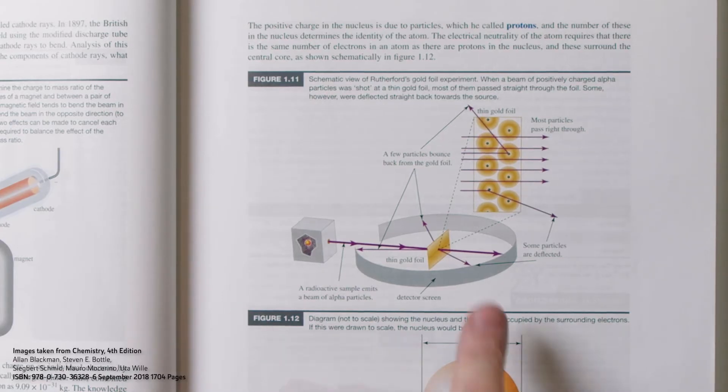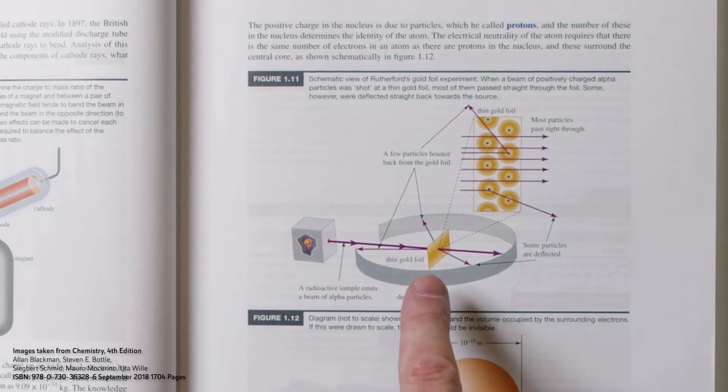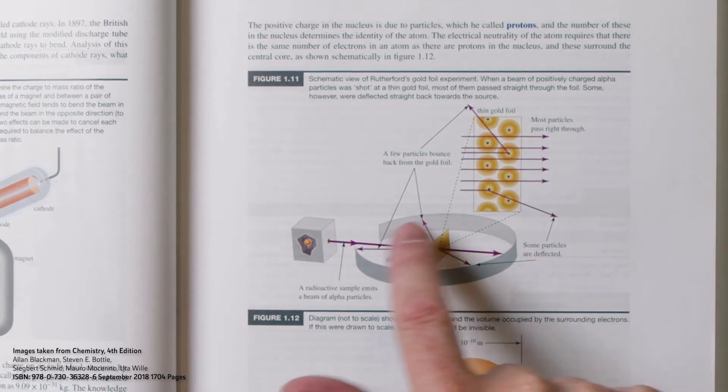You can see a setup of the experiment here. Here is the source of alpha particles — a radioactive source. Here is your gold foil. And around here is a fluorescent screen that glows every time one of these alpha particles hits it. Rutherford started off by shooting these alpha particles at the gold foil, and it was pretty dull actually, because what he found was that most of the alpha particles pretty much went straight through that very thin sheet. That wasn't the interesting part of the experiment.